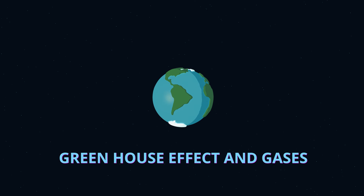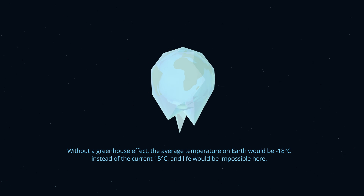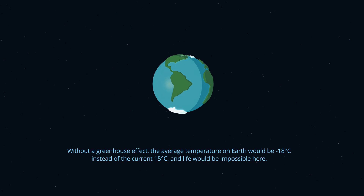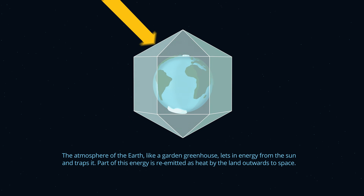Greenhouse effect and gases. Without a greenhouse effect, the average temperature on Earth would be minus 18 degrees Celsius, instead of the current 15 degrees Celsius, and life would be impossible here. The atmosphere of the Earth, like a garden greenhouse, lets in energy from the Sun and traps it.